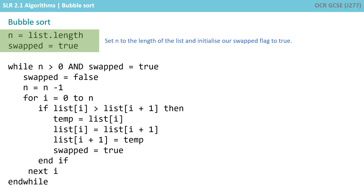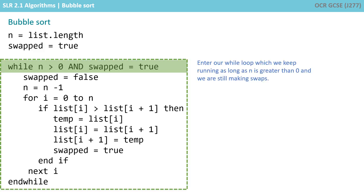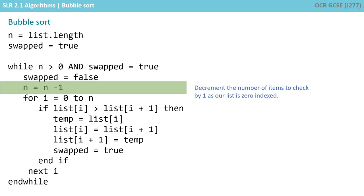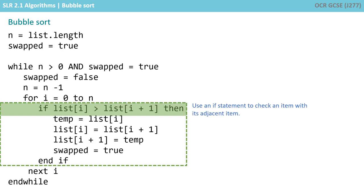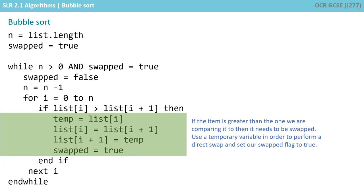In the rest of this video, we will work through the pseudocode of the algorithm. While it's important and you need to be able to spot this code, don't get too worried about remembering it line for line. We start by setting n to the length of the list and initialise our swap flag to true. We then enter our while loop, which we keep running as long as n is greater than 0 and we're still making swaps. We set our swap flag to false and decrement the number of items to check by 1, as our list is 0 indexed. We enter a for loop to run up until n — in other words, check every item. We use an if statement to check an item with its adjacent item. If the item is greater than the one we're comparing it to, then it needs to be swapped. We use a temporary variable to perform a direct swap and set our swap flag to true.